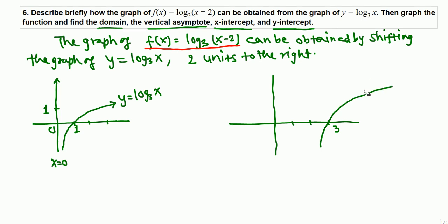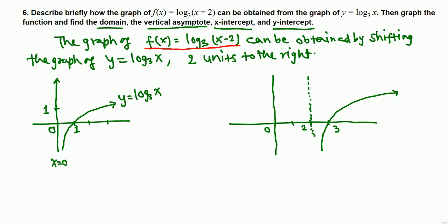The vertical asymptote x = 0 for the regular log₃(x) has shifted 2 units to the right, so now it is x = 2. The point (1, 0) shifts to (3, 0), since everything shifted 2 units to the right.